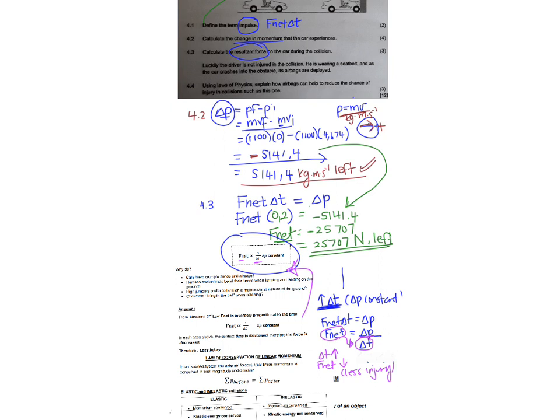So this is a popular question in the examination. And to get full marks, you would have to write your equation. You would have to show your proportionality relationship, that F net is inversely proportional to time when delta P is constant. And then you would explain and show how there would be less injury. And this question can be asked a number of ways. They could talk about crumple zones in a car, airbags, humans and animals bend their knees when jumping and landing. High jumpers land on a mattress or a mat instead of the ground. Cricketers bring in the ball when catching and that kind of thing.